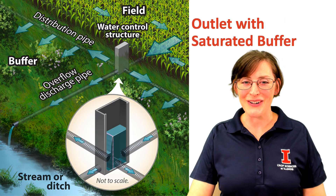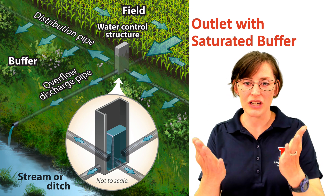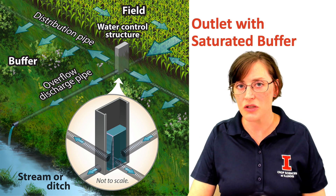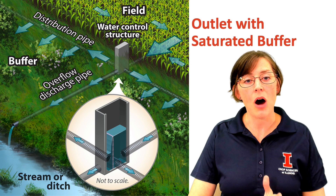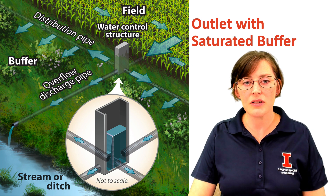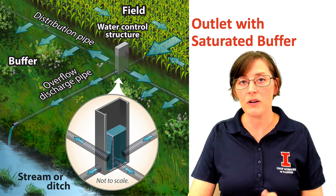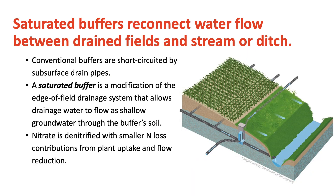A saturated buffer is a twist on these normal grass or vegetated buffers between the field and the stream, where we reroute the tile drainage water to flow as shallow groundwater. This is a modification of the edge-of-field drainage system. This practice returns the tile drainage water back into shallow groundwater so that it can flow through the soil of the buffer to the stream. As water moves through the buffer soil, the water is cleaned because the nitrate is denitrified by beneficial bacteria living naturally in the buffer soil, and the buffer plants uptake some of the water and some of the nitrogen.